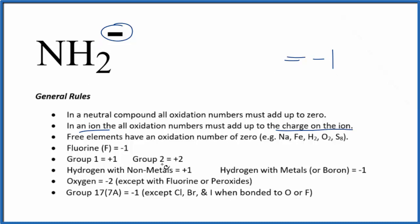Hydrogen, when it's bonded to a nonmetal, that's going to have a positive one oxidation number on each of the hydrogen. Nitrogen, we don't know that it can have different oxidation states depending on what it's bonded to. Let's just call it x.